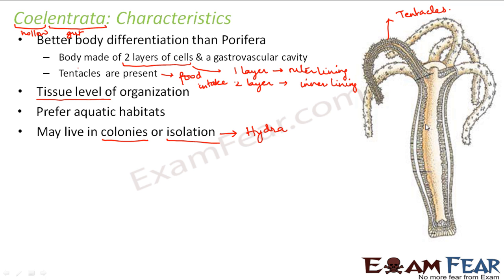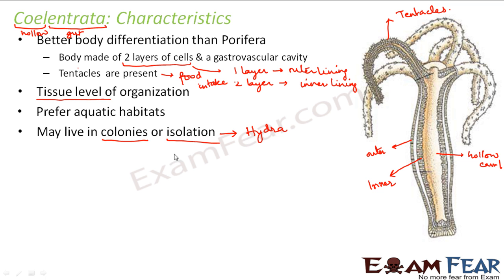In Hydra, we can identify: the tentacles, the outer lining, the inner lining, and the hollow gastrovascular cavity. These animals have a single body opening which leads to a hollow gut, and this hollow gut is surrounded by the tentacles on all sides.